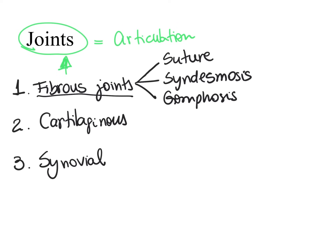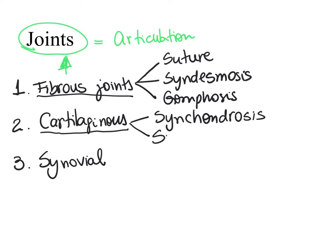Another type of joint based on what we find between the bones is the cartilaginous joint. As the name suggests, in cartilaginous joints we will find cartilage between the bones. We have two types: synchondrosis cartilaginous joints and symphysis cartilaginous joints. The main difference is the type of cartilage found.